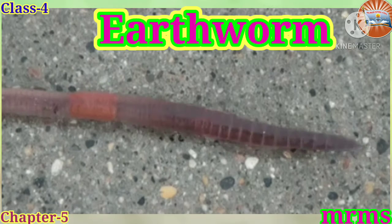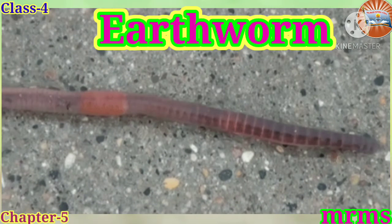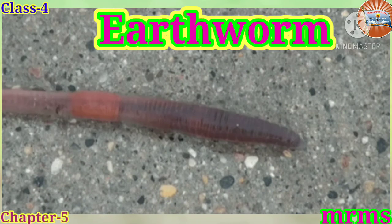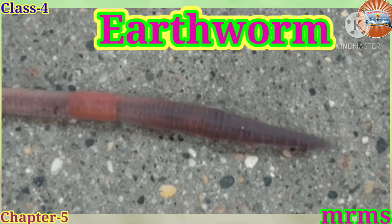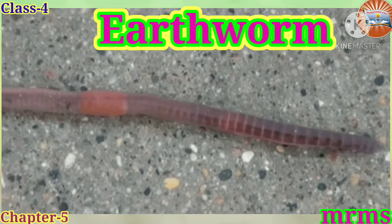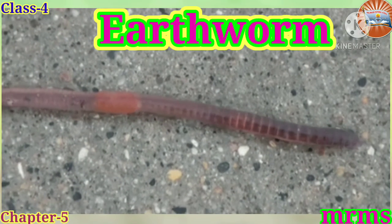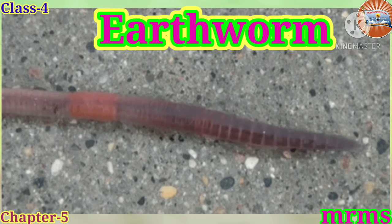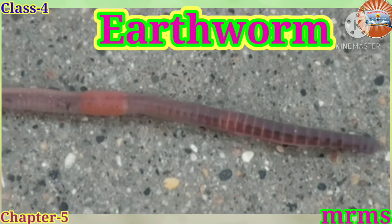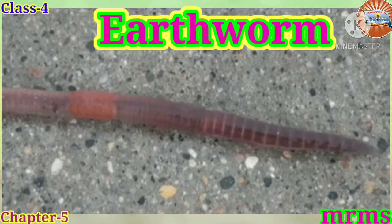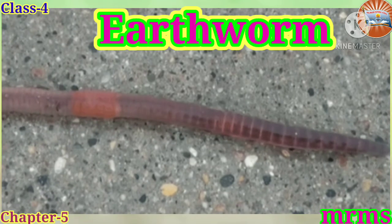Earthworm is a useful creature. Earthworm is a tube-shaped segmented worm which is commonly found in soil and feeds on plant and animal waste.